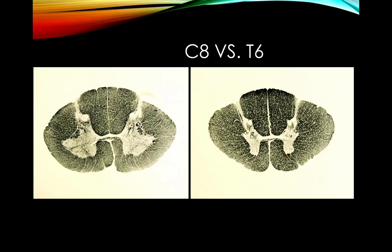Two nuclear groups are seen mainly in the thoracic cord, sometimes down to L1-L2. Clark's nucleus is associated with the dorsal spinocerebellar tract. The other unique feature is the intermediolateral cell column — a small projecting nucleus containing the preganglionic sympathetics. Remember: parasympathetics are craniosacral, exiting with cranial nerves and in the sacral cord. Sympathetic preganglionic neurons come out mainly from the thoracic cord, sometimes extending to T1 or down to L1-L2.